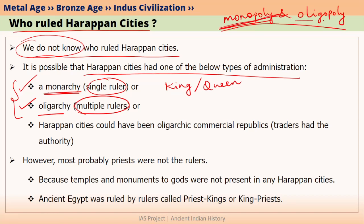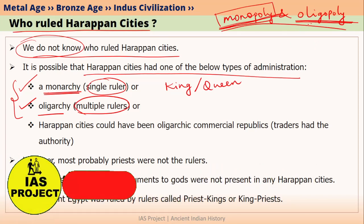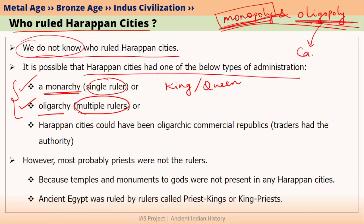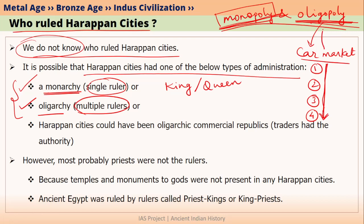Similarly, if two or more companies have complete control over the market for some product, then we say that those companies have an oligopoly. You use monopoly very regularly in your day-to-day language, but let me give you an example of oligopoly. Think of the car market in India — you only have selected car manufacturers actually controlling almost the entire market. You can count them on your fingers. So we can say these car manufacturing companies are playing an oligopoly in the Indian car market.